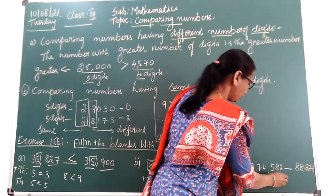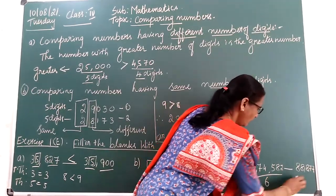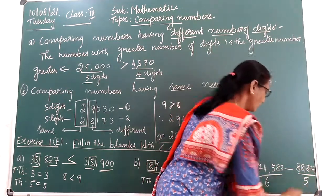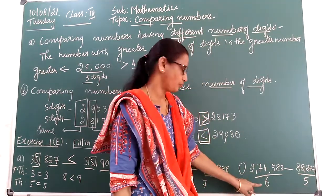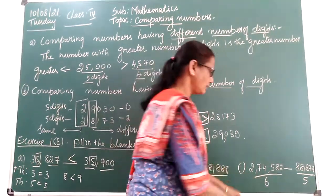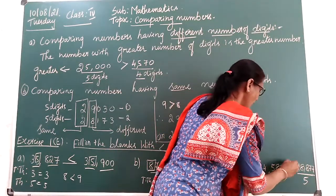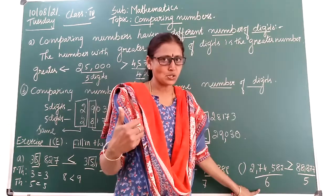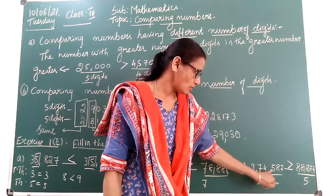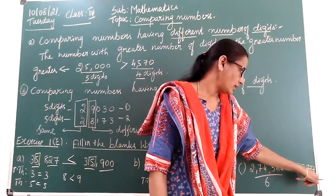See children — how many digits? 3 plus 2 = 5? No, 6 digits here. Here, 2 plus 3 = 5 digits. So, always the number having more digits is the greater number. No need to compare the places if their digits are different. Therefore, 2,74,592 is greater than 88,877.